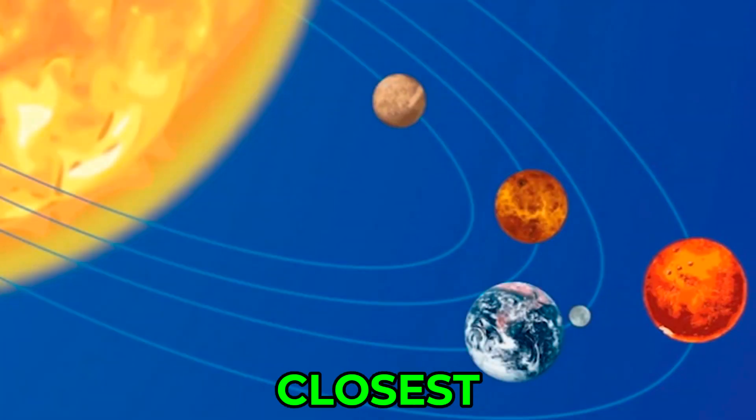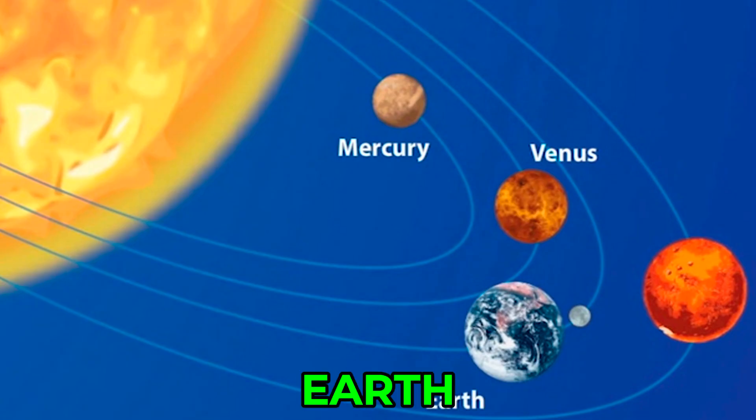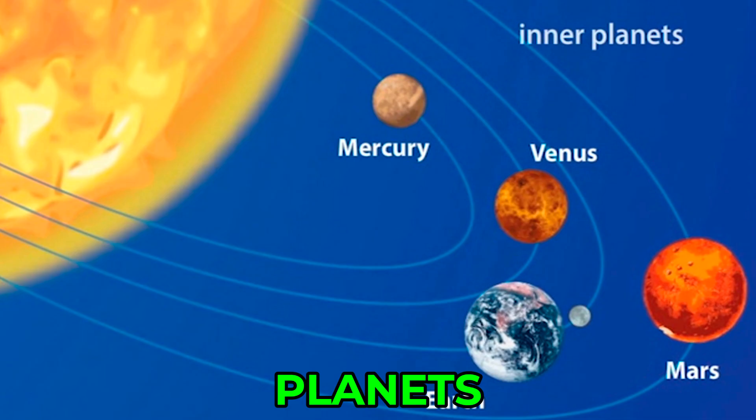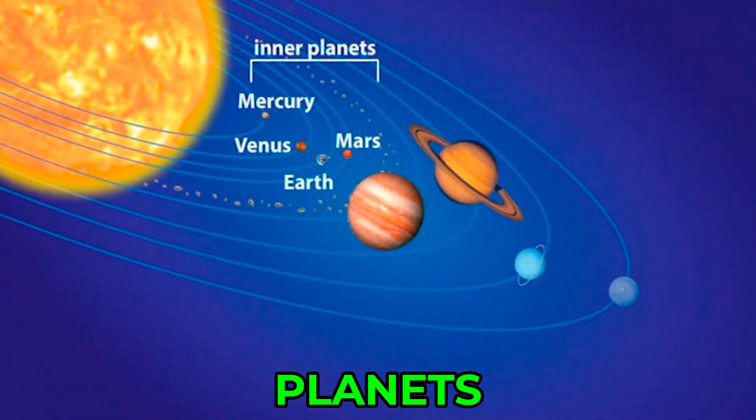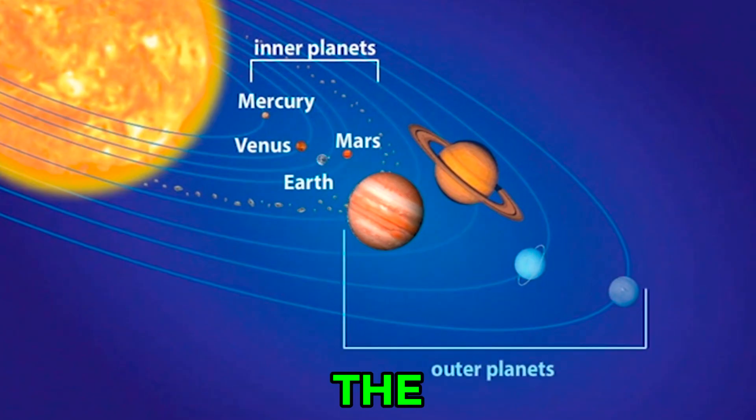The four planets closest to the Sun—Mercury, Venus, Earth, and Mars—are grouped together as the inner planets. They have rocky surfaces and are often called the terrestrial planets. These planets are small and closely spaced as compared to the outer planets.